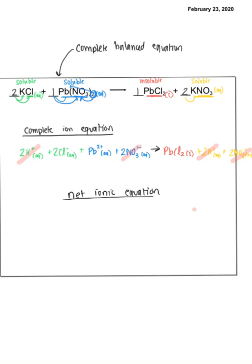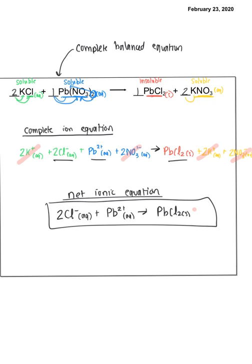So for our net ionic equation, those guys that I crossed off are called the spectator ions. They are present for the reaction, but they're not actually doing the heavy lifting. So for our net ionic equation, we write everything, except what we crossed off. So I did not cross off this guy. I did not cross off this guy and I did not cross off that solid. So there is my full net ionic equation. My spectators were the potassium and the nitrate.